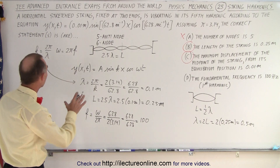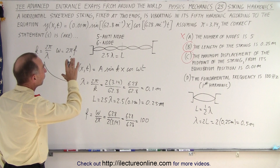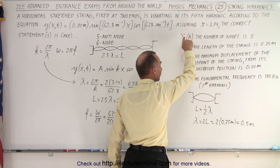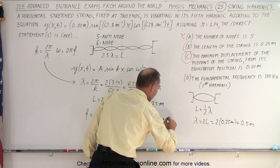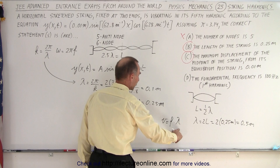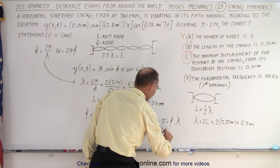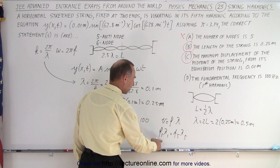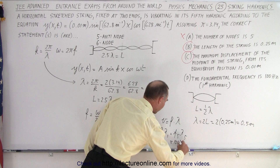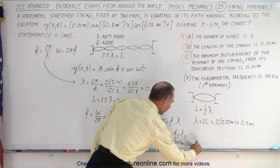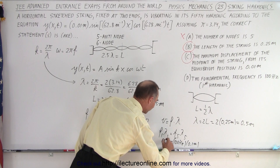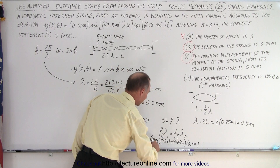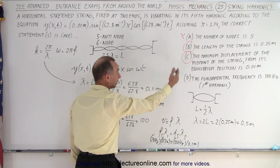Since velocity = f × λ is constant, f₁λ₁ = f₅λ₅. For the first harmonic, L = λ/2, so λ₁ = 2 × 0.25 = 0.5 meters. Therefore f₁ = f₅ × λ₅/λ₁ = 100 × 0.1/0.5 = 20 Hz. The fundamental frequency is 20 Hz, not 100 Hz, so answer D is not correct.